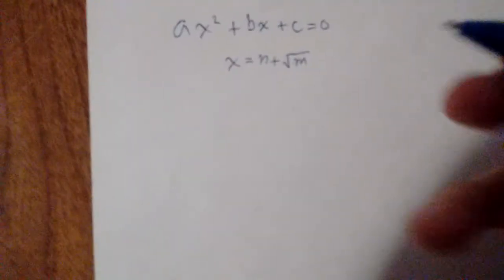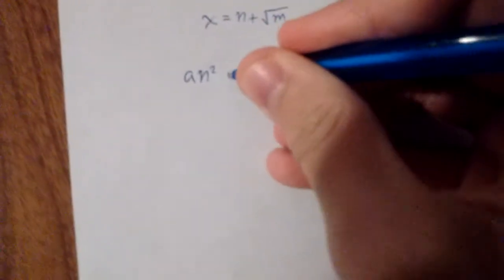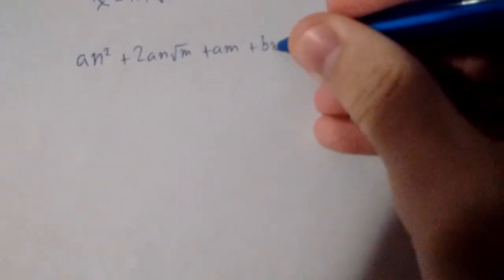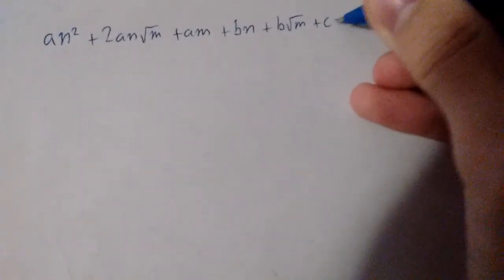If you substitute x into here and expand, you get a n squared plus 2 a n square root of m plus a m plus b n plus b square root of m plus c equals 0.